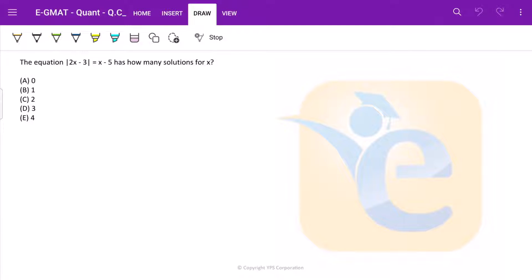Hello and welcome back to yet another solution. Today we will be solving a quant question. Let us jump directly into it. The equation |2x - 3| = x - 5. How many different solutions for x?